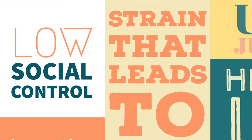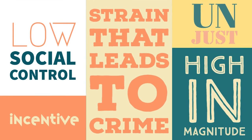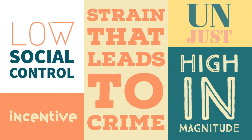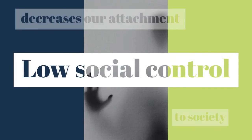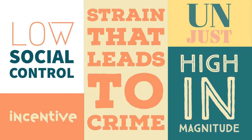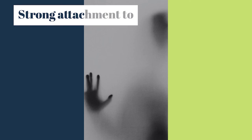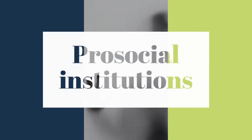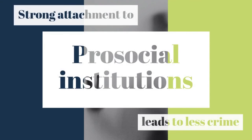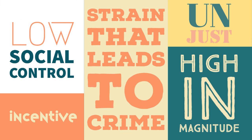Strains that are associated with low social control. Strains that are related to low social control, such as overly permissive parenting, increase the likelihood of crime because they decrease our attachment to society. So if we perceive we have relatively little to risk by engaging in crime, we're more likely to do it. On the other hand, if we have high stakes in pro-social institutions, such as strong family relationships or good working relationships, we're less likely to choose criminal behavior as a source of coping because we fear losing the institutions or persons to which we are attached.